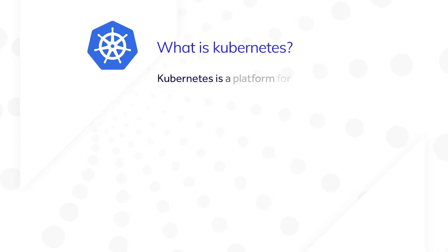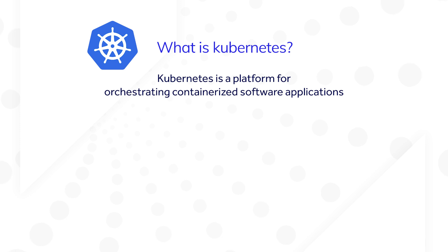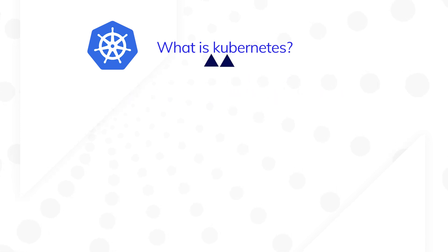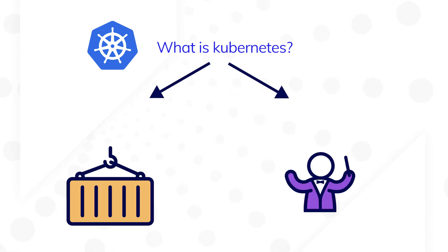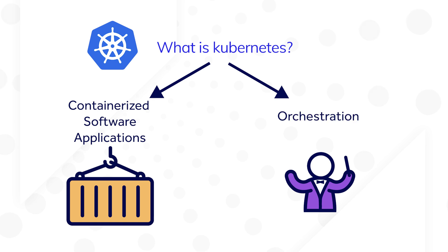So what is Kubernetes? In short, it's a platform for orchestrating containerized applications. But that's a bit of a mouthful, so let's break it down into two parts: containerized applications and orchestration.